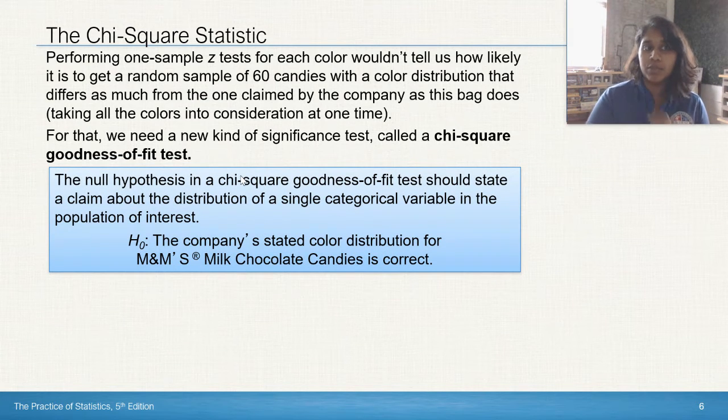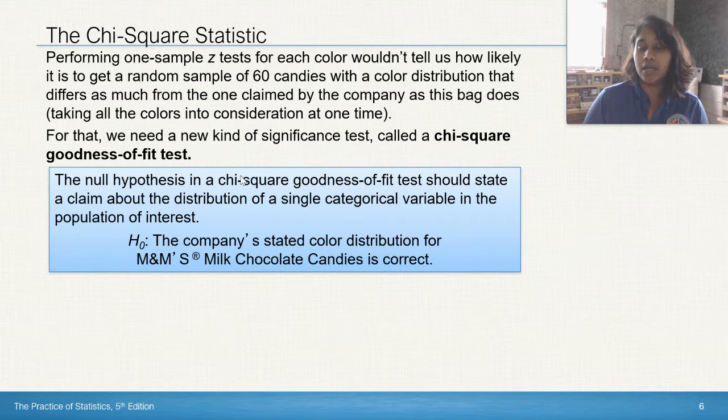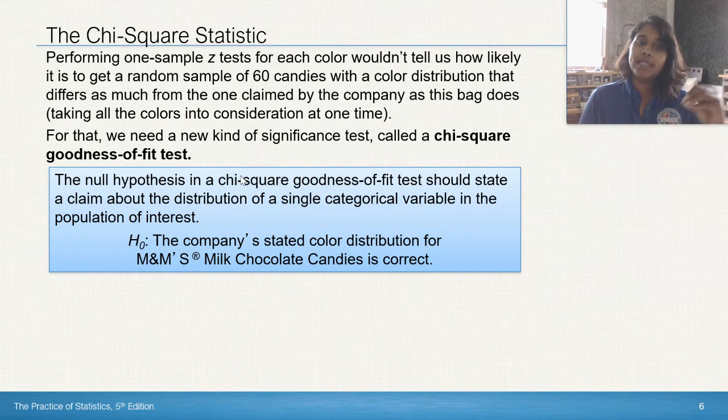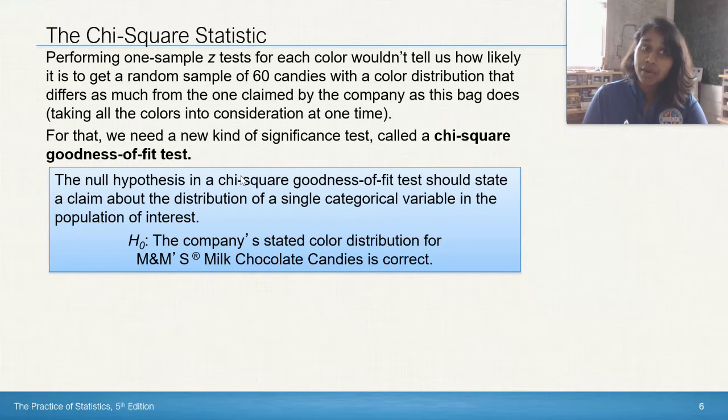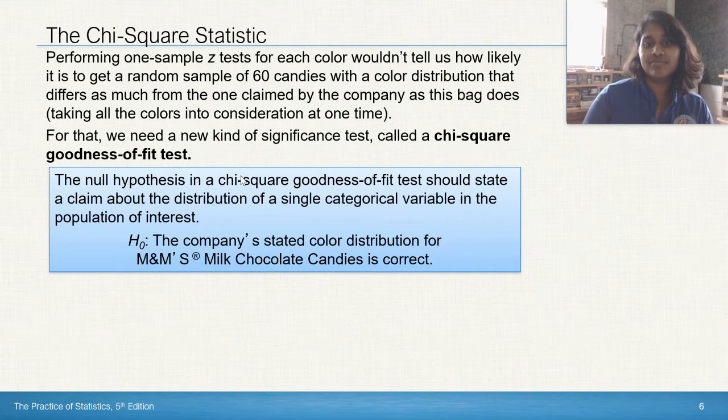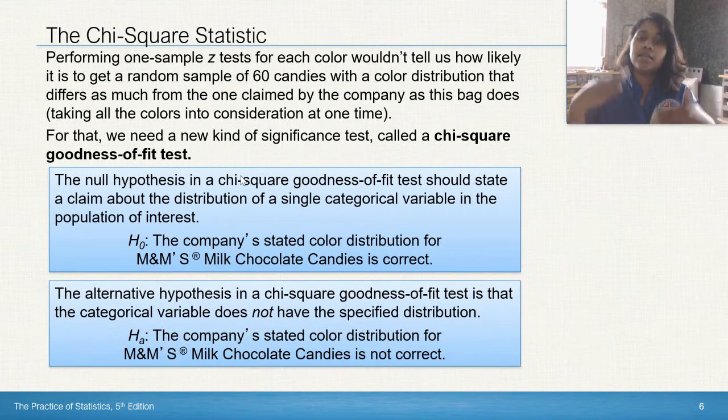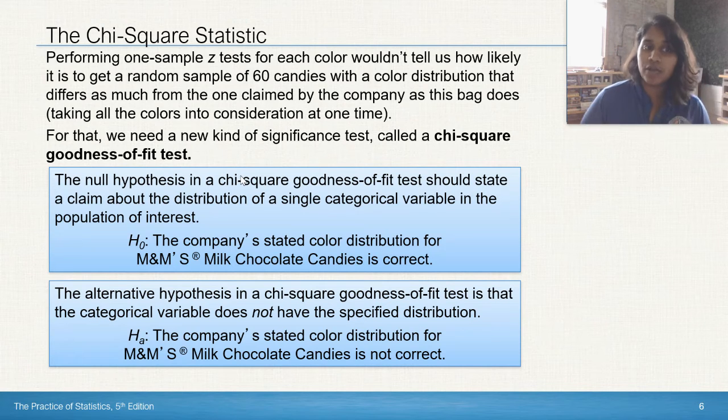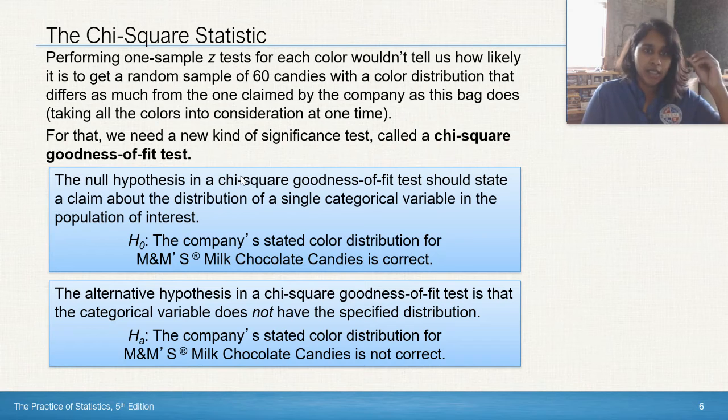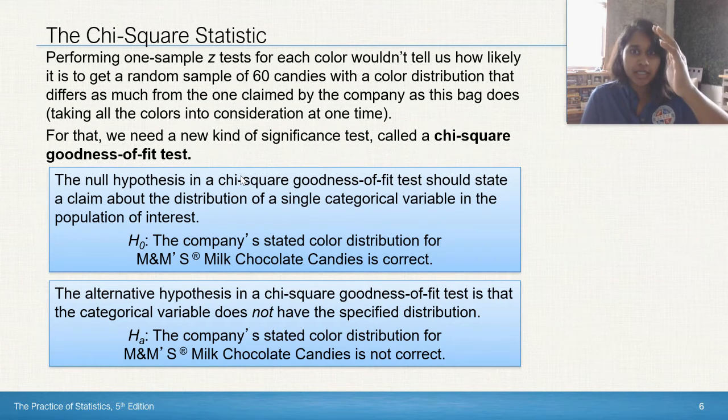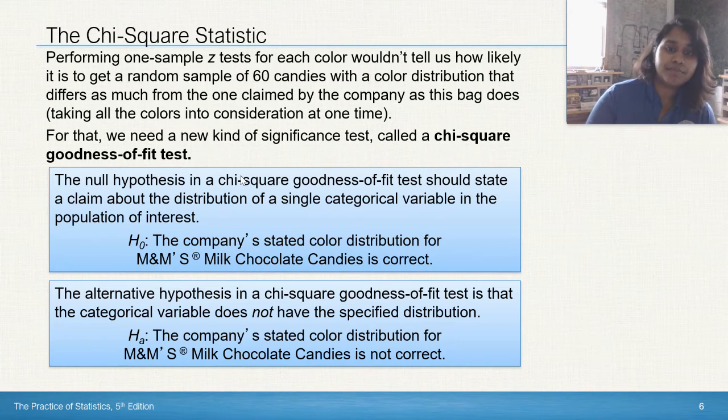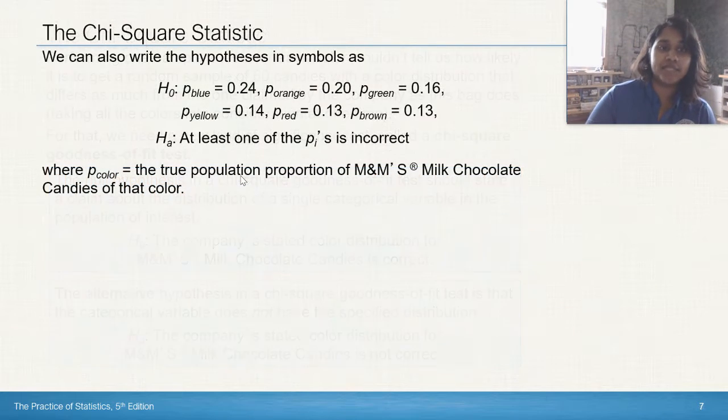In our example, our null hypothesis for our example would be the company's stated color distribution for M&M's milk chocolate candies is correct. So guess what the alternate is going to be? Isn't that correct? And this is a pattern that you're going to develop for all of your chi-square null and alternate hypothesis. It's simply going to be the information in context is correct. The information in context is not correct.